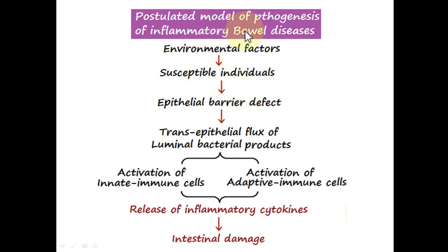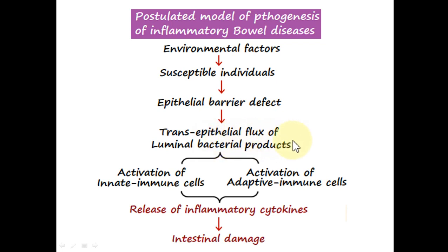A postulated model for the pathogenesis of IBD states that in a genetically susceptible individual, environmental factors cause an epithelial barrier defect. As a result, bacteria present in the lumen of the large intestine get through the tight epithelial junctions. In ulcerative colitis, these are the body's own bacteria; in Crohn's disease, some foreign pathogens may be involved. The influx of bacteria and bacterial components causes activation of both branches of the immune system.